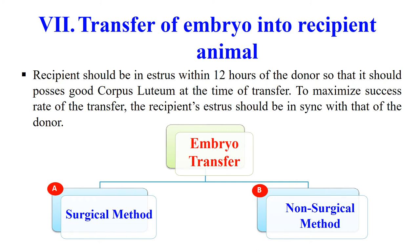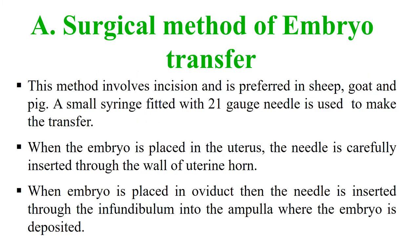Transfer can be done by either surgical or non-surgical method. In the surgical method, the embryo is surgically transferred into the recipient, preferred for sheep, goat, and pig. A small syringe fitted with a 21-gauge needle is used. When the embryo is placed in the uterus, the needle is carefully inserted through the wall of the uterine horn. When placed in the oviduct, the needle is inserted through the infundibulum into the ampulla where the embryo is deposited.